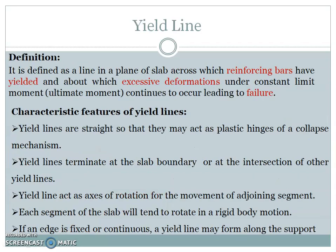To define yield line: a yield line is defined as a line in the plane of the slab across which reinforcement bars have yielded and about which excessive deformation under constant limit moment continues to occur, leading to failure.